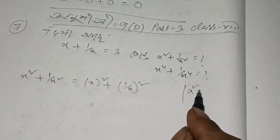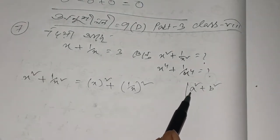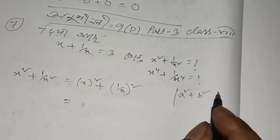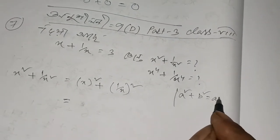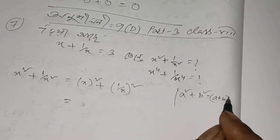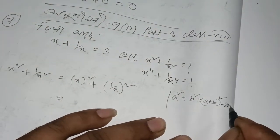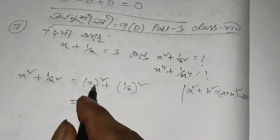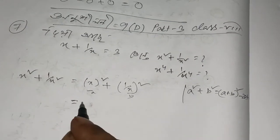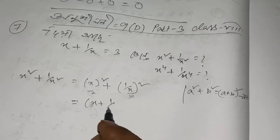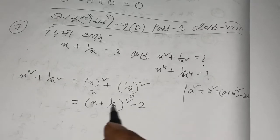We have a square plus b square, and a square plus b square equals a square plus b square minus twice a b. And a squared, a squared is b. So x plus 1 by x, all square, minus twice a b twice.